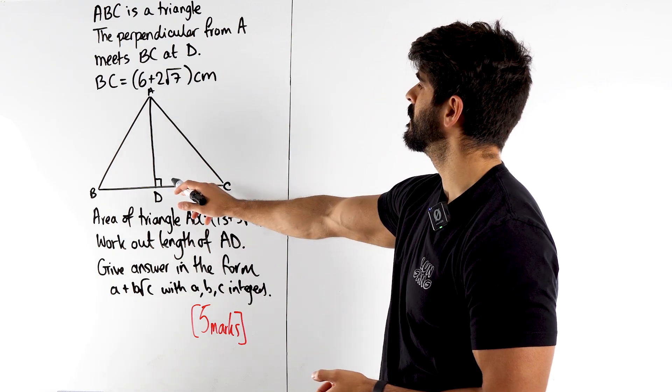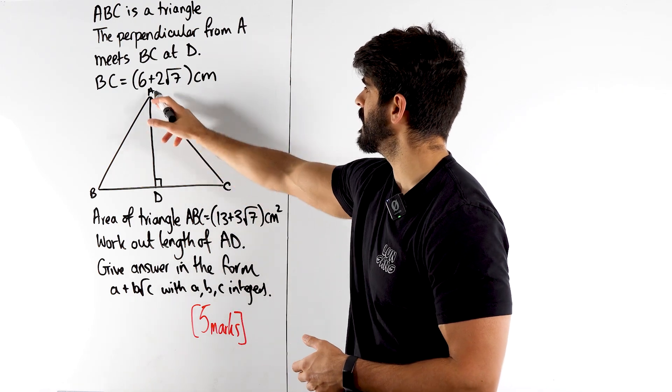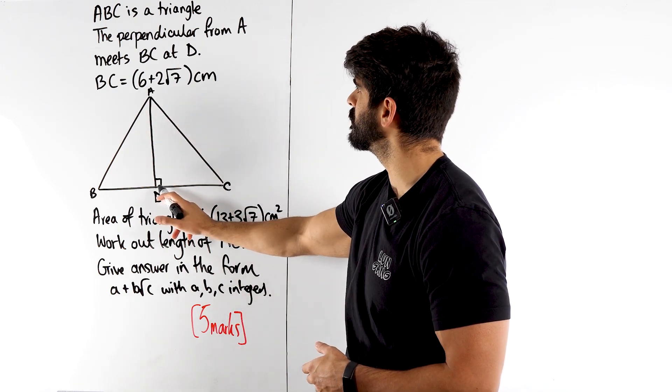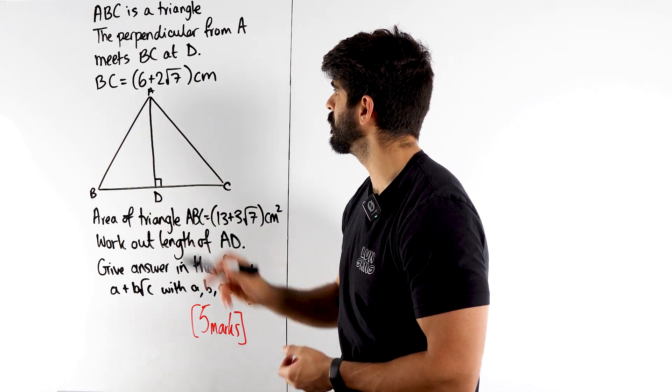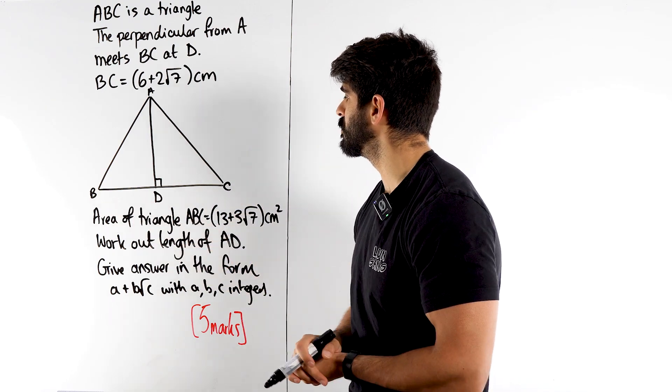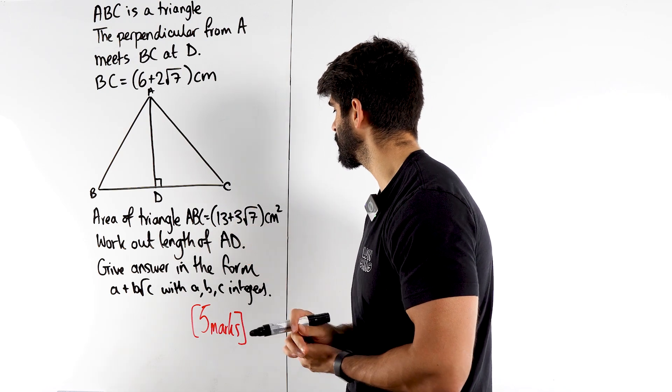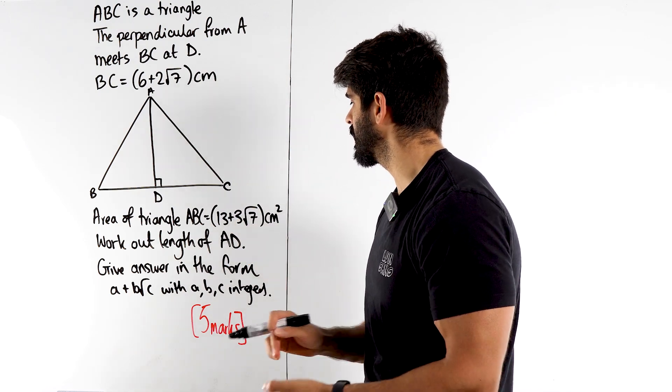So it says ABC is a triangle. The perpendicular from A, you can see that 90 degrees, meets BC at the point D. It says BC is 6 plus 2 root 7. The area of the triangle is 13 plus 3 root 7. Work out the length of AD.